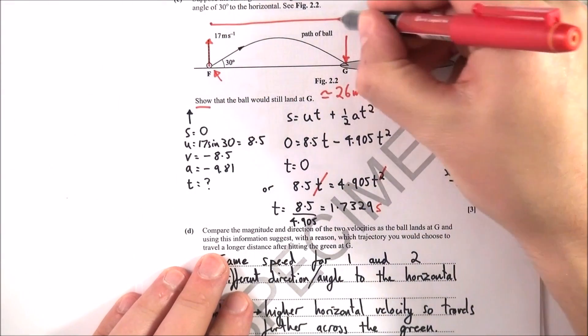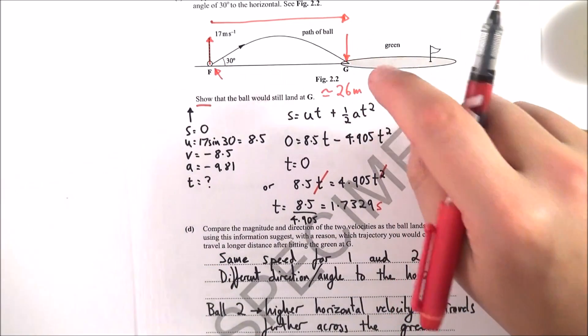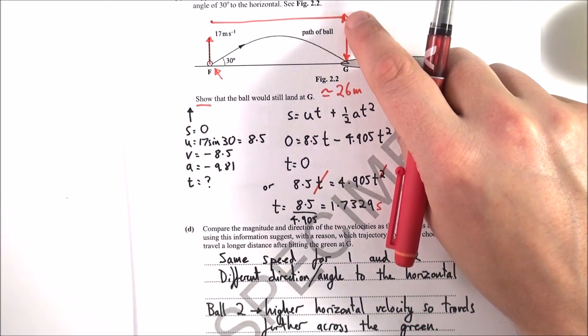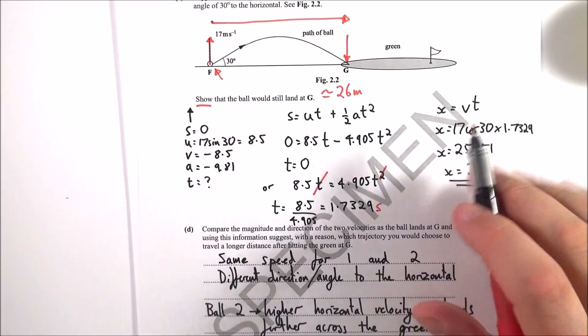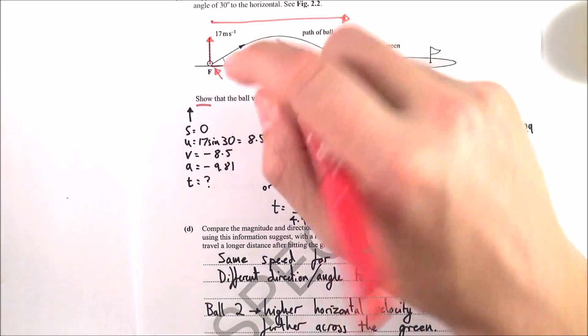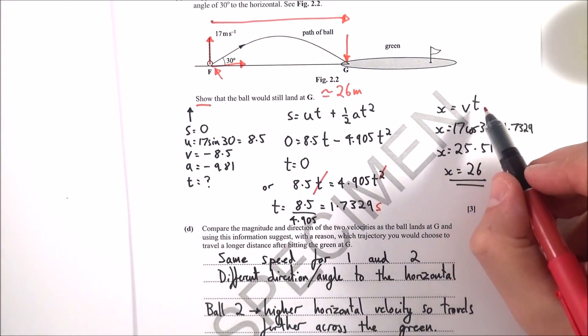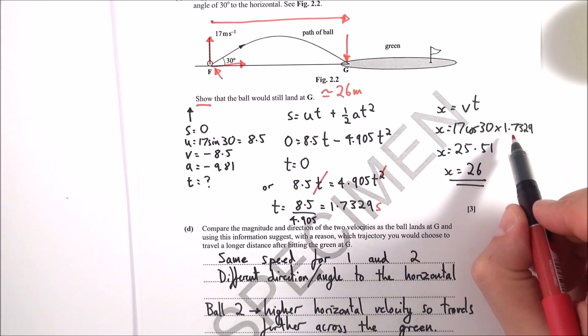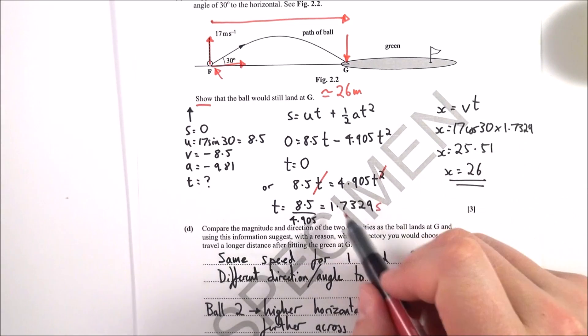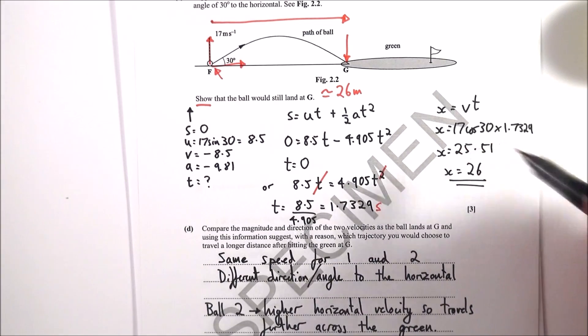So it takes 1.73 seconds, so compared to the last time it took less time to go from F to G, but it went at a higher horizontal velocity. My horizontal velocity in this case was equal to 17 cos 30. So it takes less time but it's going faster, and therefore the distance traveled is equal to VT, so 17 cos 30 times 1.7329. Again I kept the whole number in my calculator, which gave me a value of 25.51, which I can then round up to 26 meters.